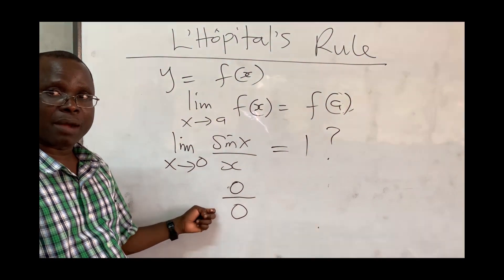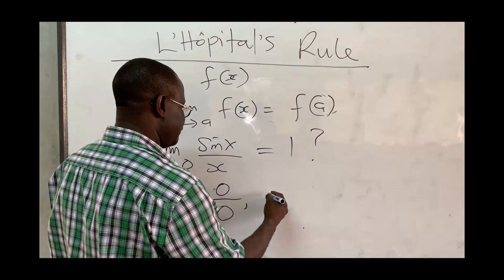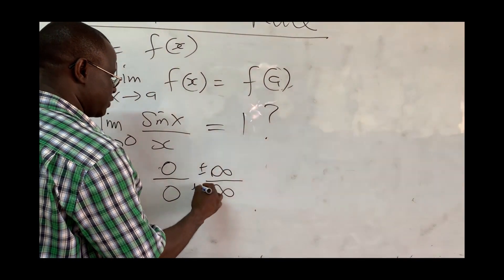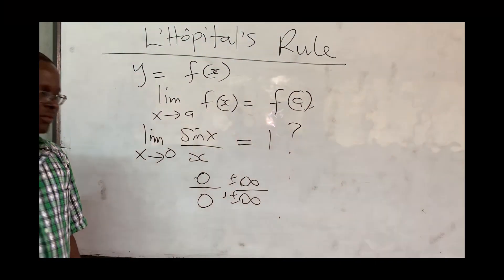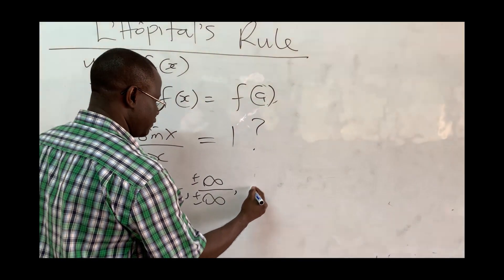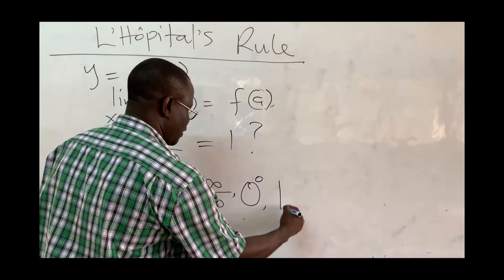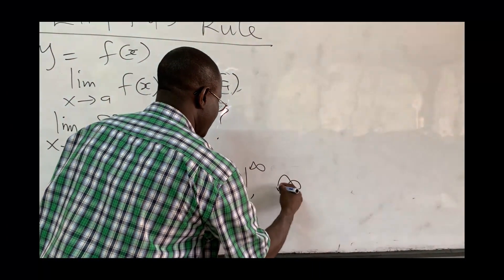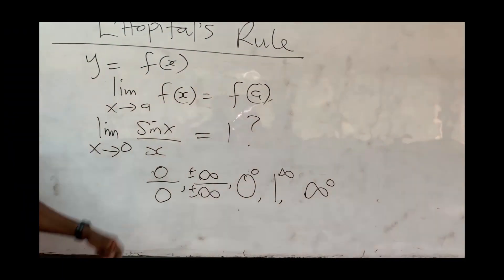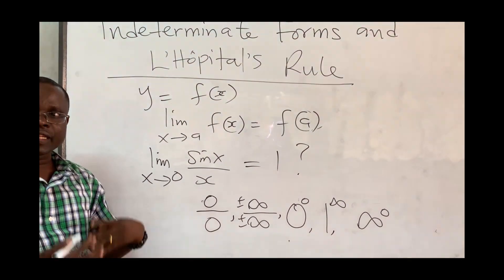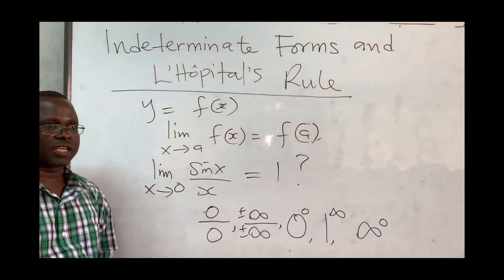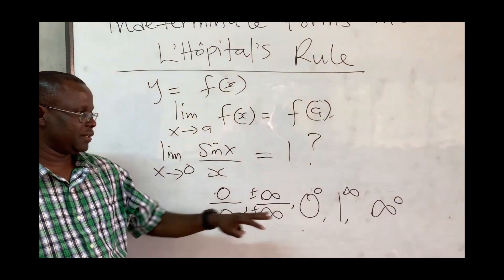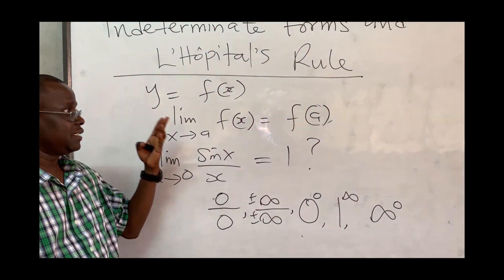So 0/0 is one indeterminate form we'll come across often. We also have infinity/infinity — with plus or minus signs — as indeterminate forms. Other indeterminate forms include 0 to the power 0, 1 raised to the power infinity, and infinity raised to the power 0. All of these are termed indeterminate forms, and we'll see why finding these limits matters when we study order of magnitude.